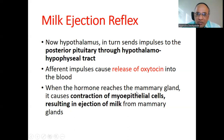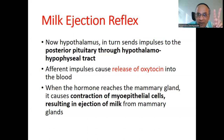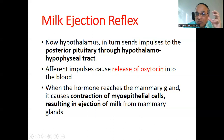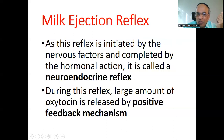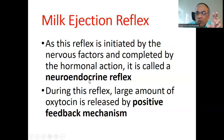When oxytocin reaches the mammary gland, it causes contraction of myoepithelial cells, resulting in ejection of milk from the mammary glands. Oxytocin serves two purposes: contraction of the uterus during delivery (labor pain), and breast milk ejection. As this reflex is initiated by nerve factors — touch receptors — and completed by hormonal action — oxytocin — it is called a neuroendocrine reflex.